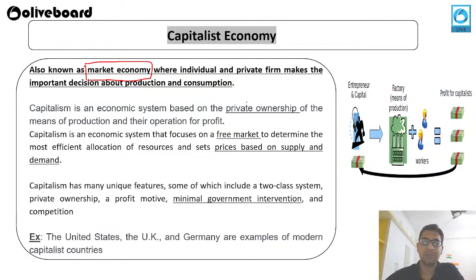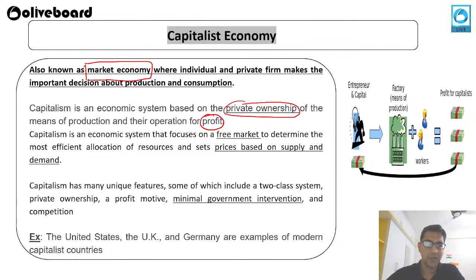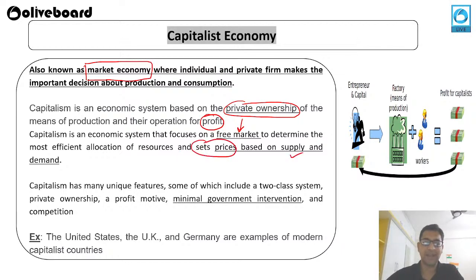Capitalism is an economic system based on private ownership of the means of production, where a person can control the means of production and operate them for profit. Two things are very important in capitalism: private ownership and profit as the main motive. Capitalism focuses on a free market where competition is very important. Based on competition, they are able to find out the proper prices of things. In a free market or capitalist economy, prices of goods are set based on supply and demand.